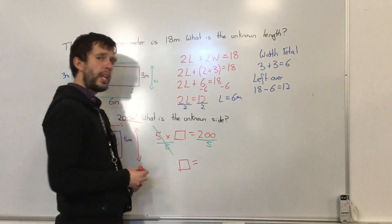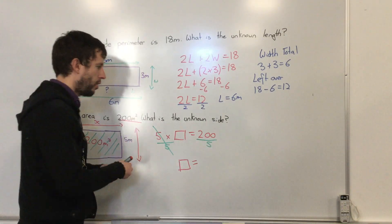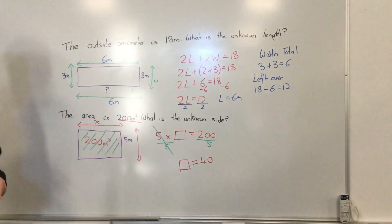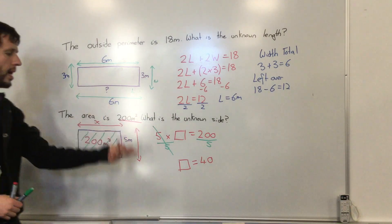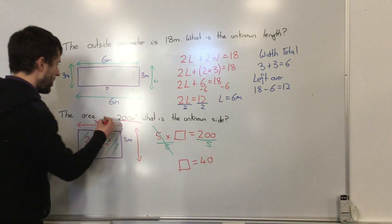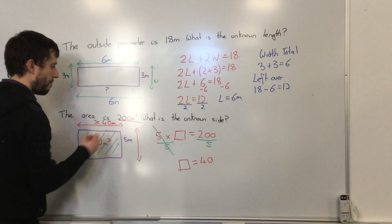The way I worked that out in my head was 20 divided by 5 equals 4, add a 0 becomes 40. We can double check that: 40 times 5 is 40, 80, 120, 160, and 200. So that just means that the length of the unknown side is 40 meters.